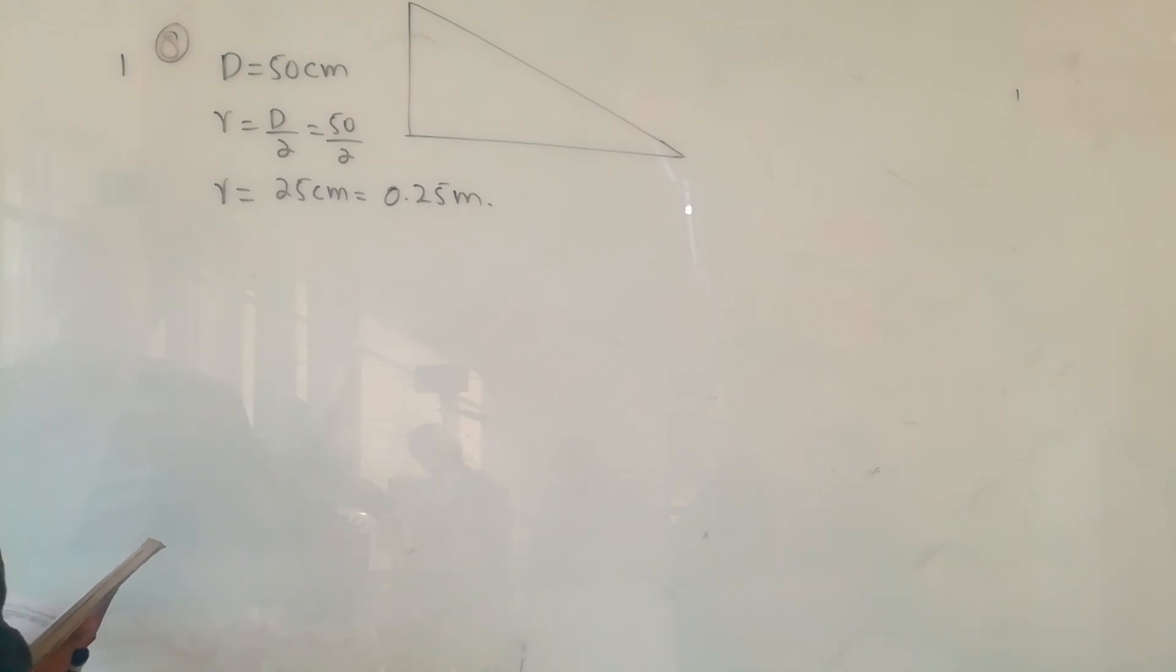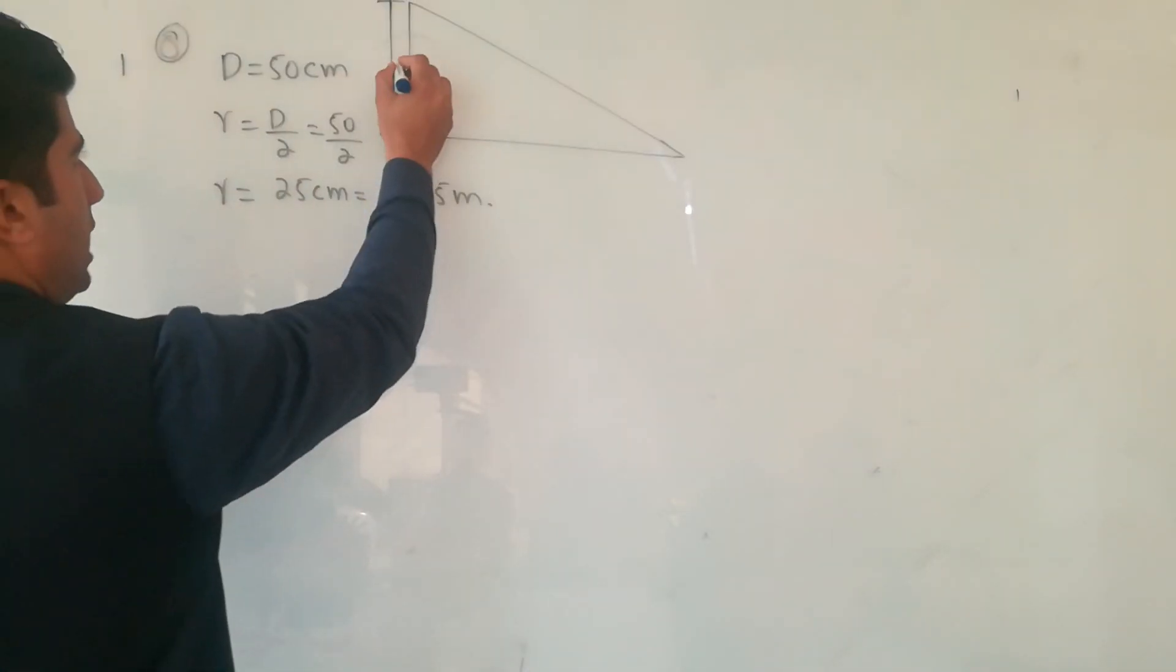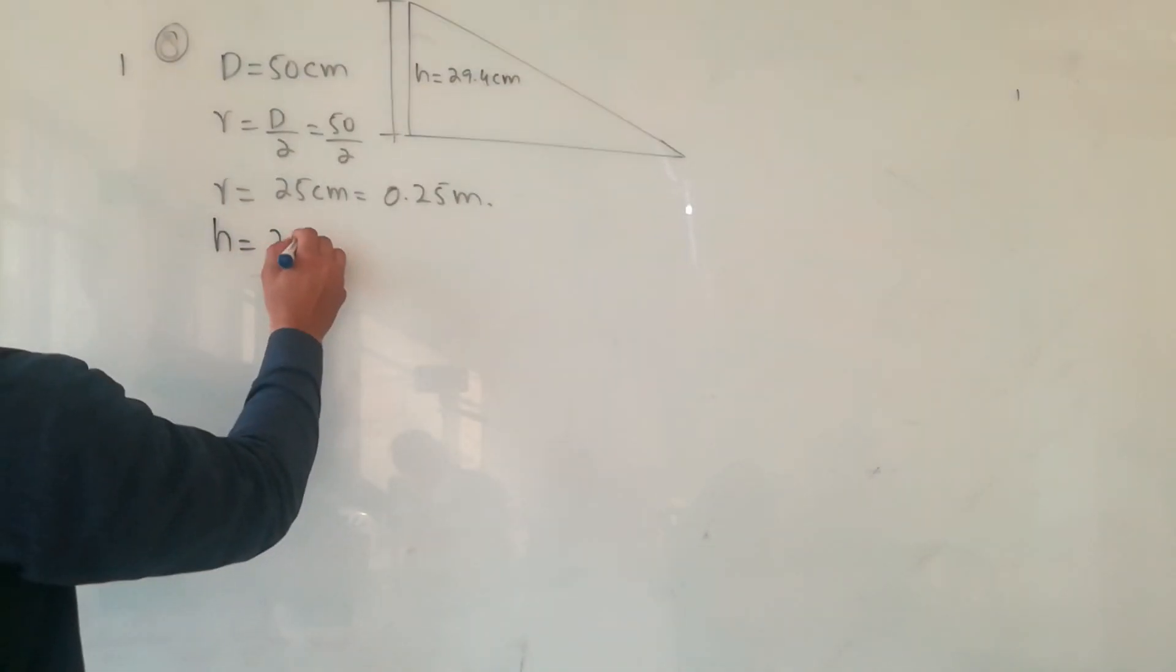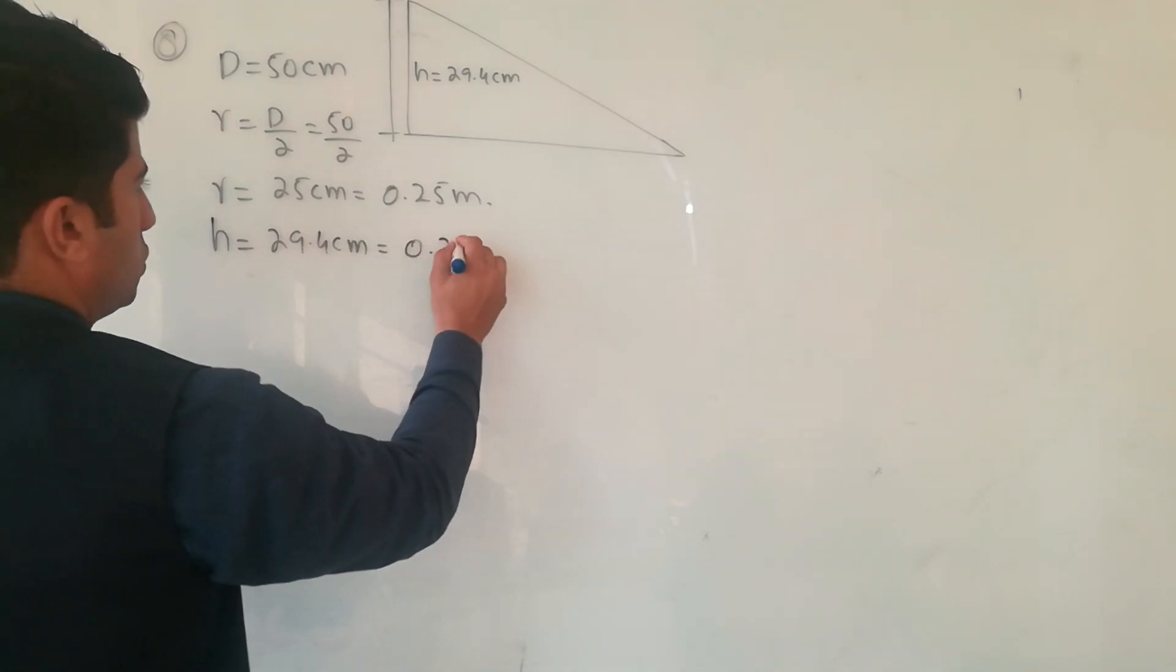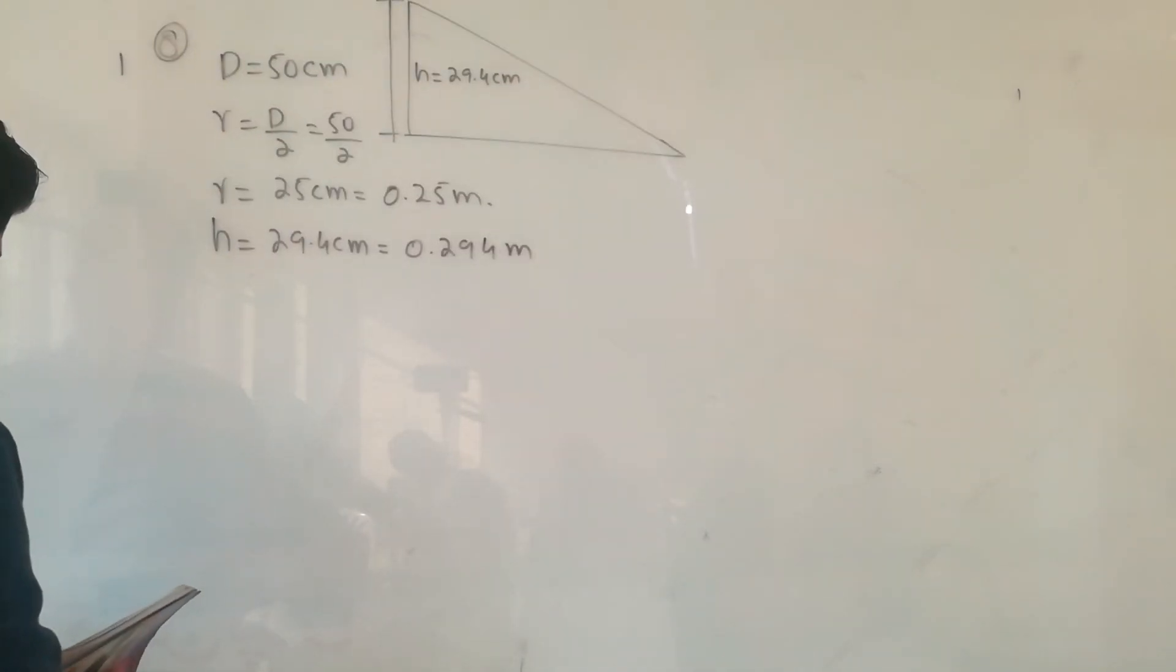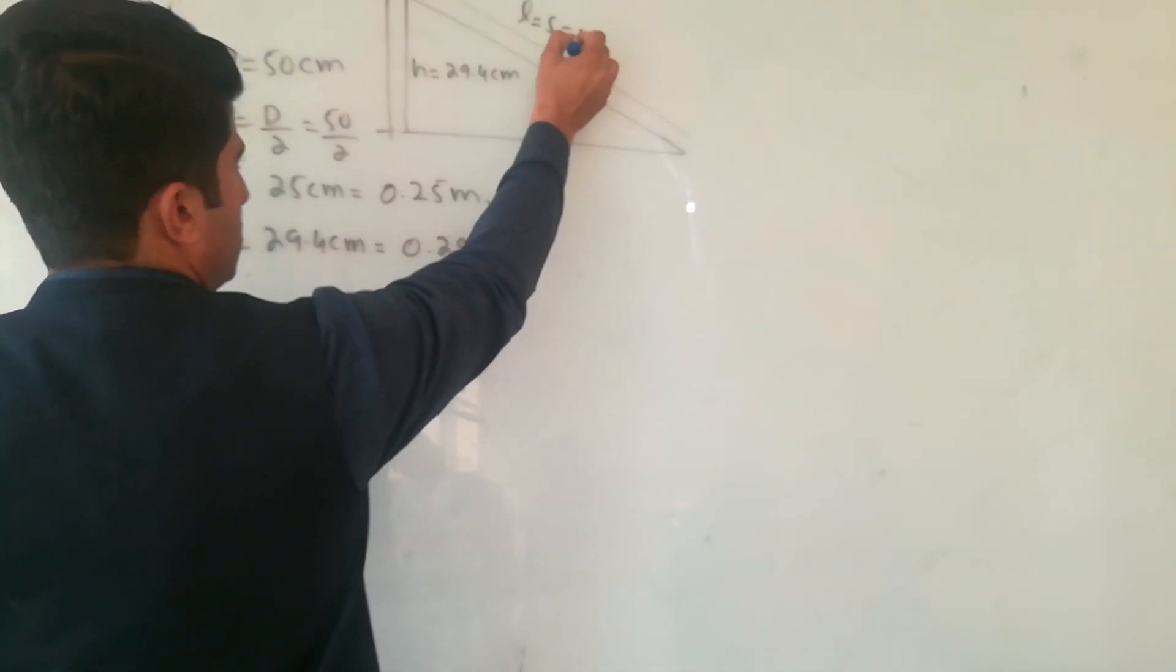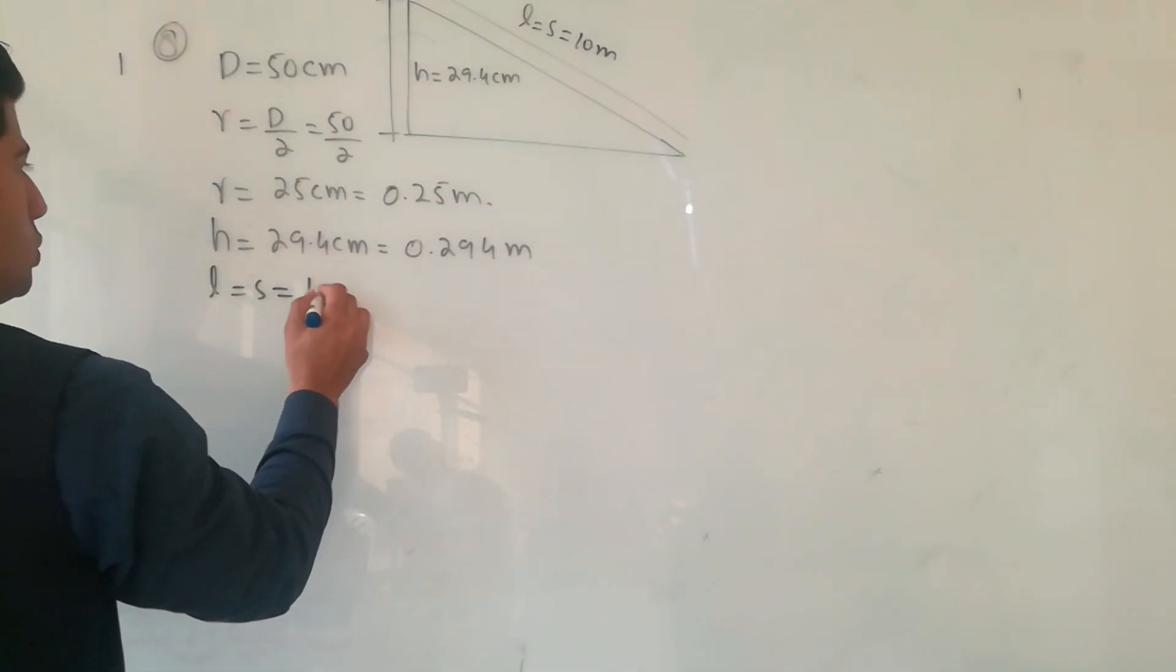The height is 29.4 centimeter on the inclined plane, so h equals 29.4 centimeter, which is 0.294 meters. And 10 meter long is the length or distance, so l or s equals 10 meter.